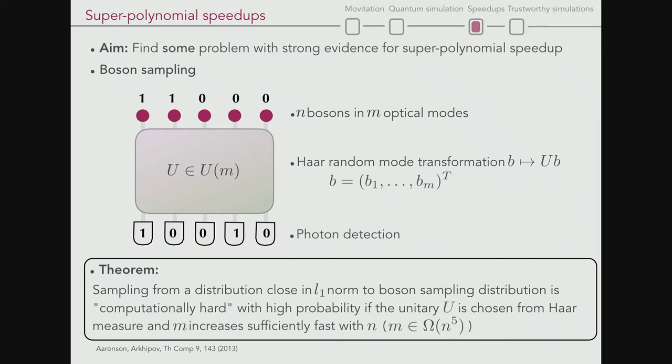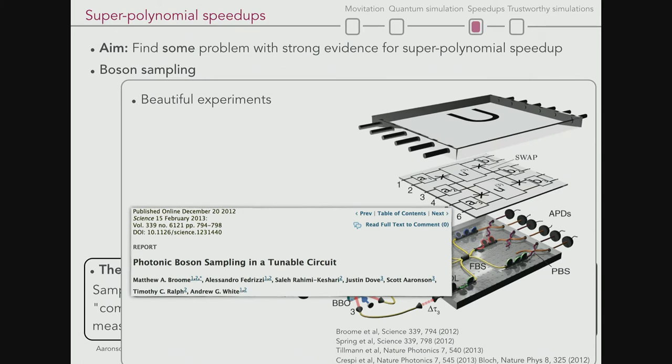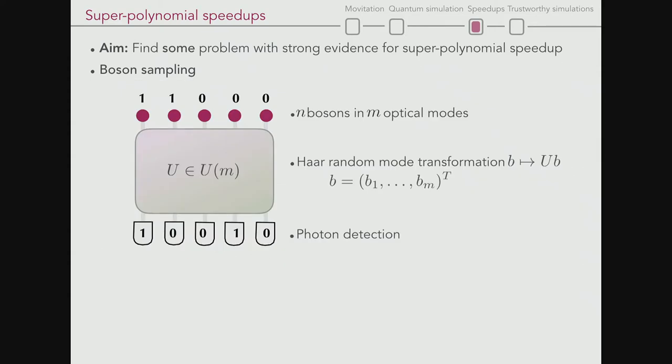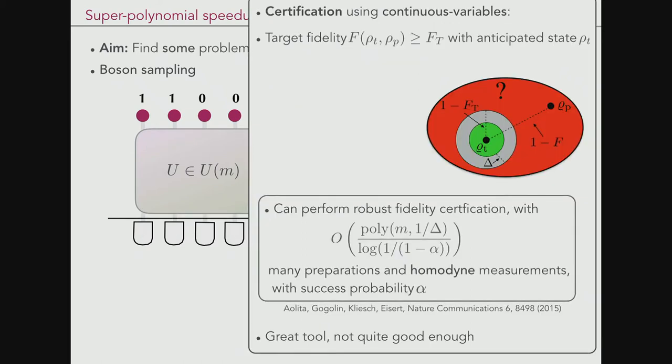This motivated beautiful proof-of-principle experiments based on integrated optical circuits or bulk optics, realizing small instances. Can you verify the correctness of the state being prepared? We spent time finding tools to verify correctness based on measurements without achieving tomographic knowledge. This is good for Gaussian states and low photon number states, but it's not quite possible to verify the correctness for this state.